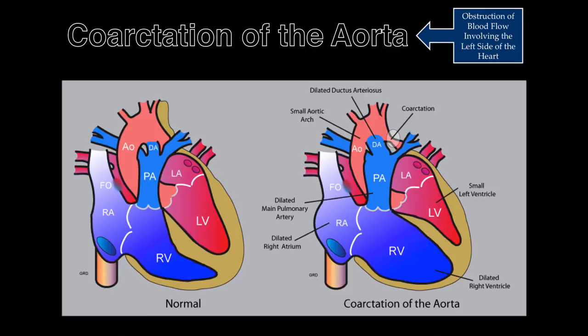Coarctation of the aorta occurs in 1 in 5,000 live births. Coarctation refers to narrowing of a segment of the aorta along the aortic arch. The narrowing usually occurs near the origin of the ductus arteriosus, distal to the left subclavian artery.